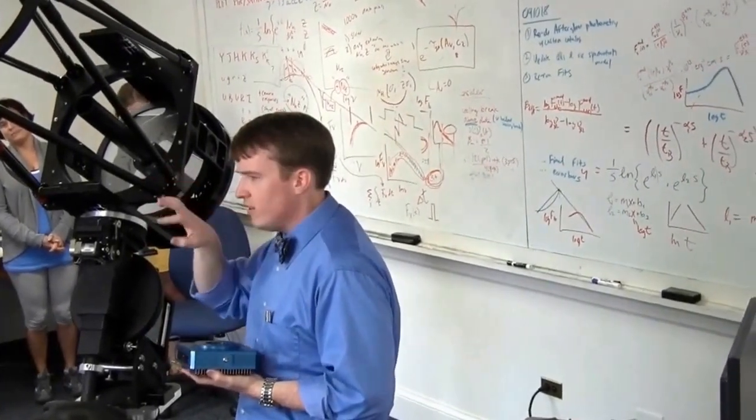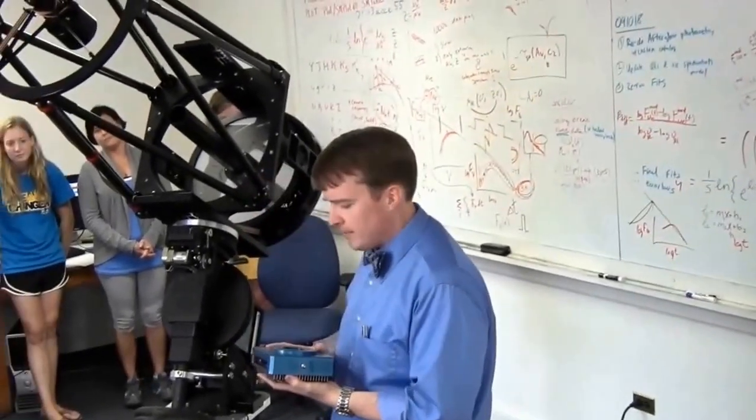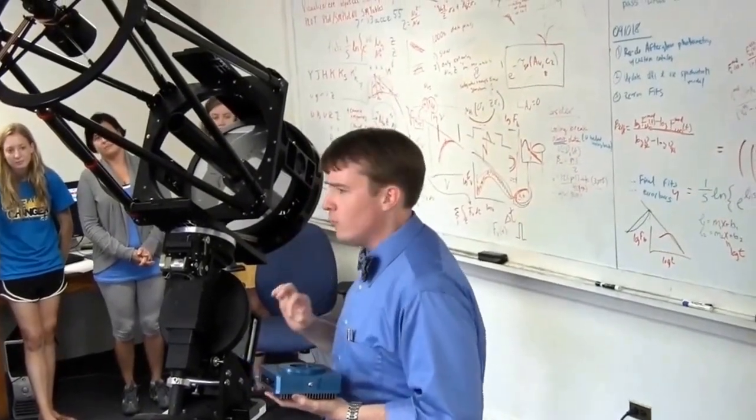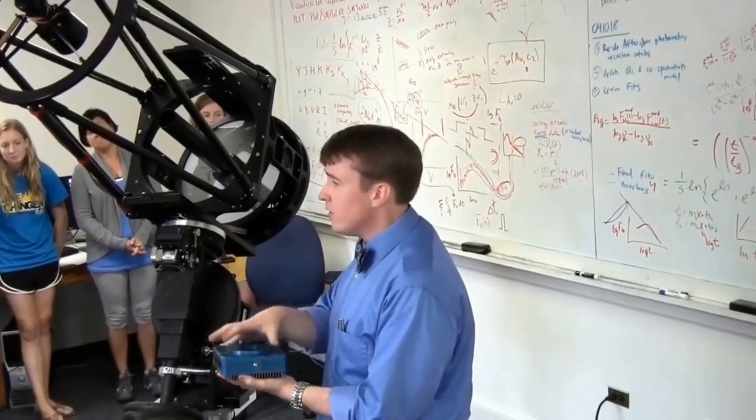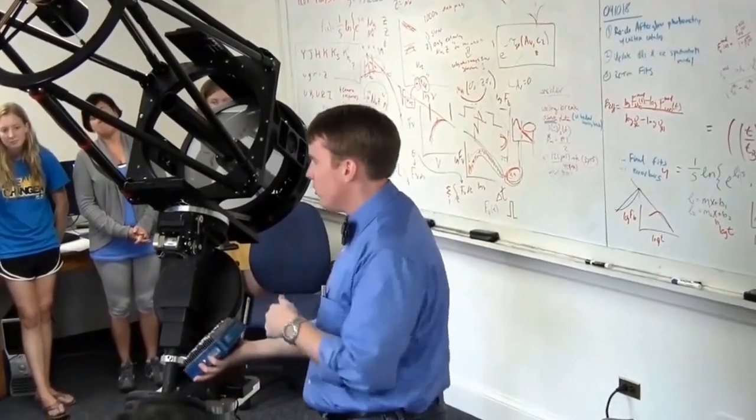If you take your point-and-shoot digital camera and take a picture in a dark room, it looks all speckly - there are all kinds of little colored lights all over the place. Those speckles are thermal noise; the heat of the camera itself is registering in the picture. This camera we can cool down - that's what all this equipment on the back is for.